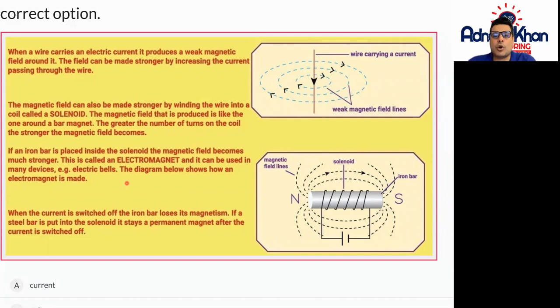When the current is switched off, the iron bar loses its magnetism. If a steel bar is put into the solenoid, it stays a permanent magnet after the current is switched off.